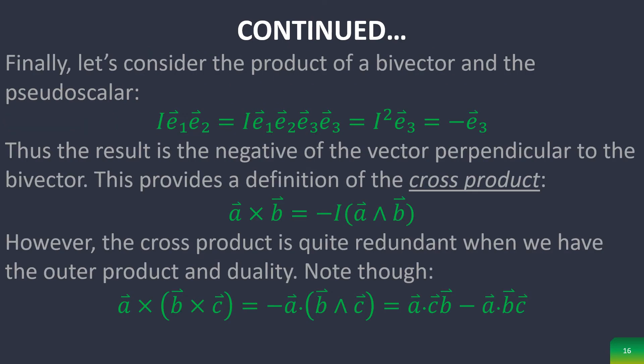If we consider the product of a pseudoscalar and a bivector, it returns a vector perpendicular to the bivector, which is exactly what the cross product does. However, the cross product is quite redundant when we have the outer product and duality. But it has some interesting properties to take note of. However, it's not necessarily used because it is less intuitive than duality and outer product.